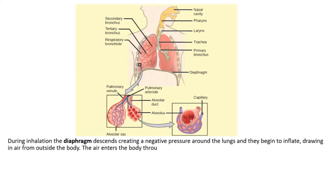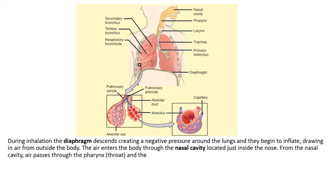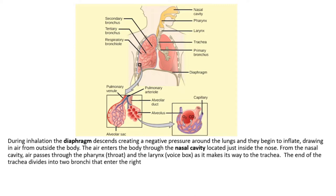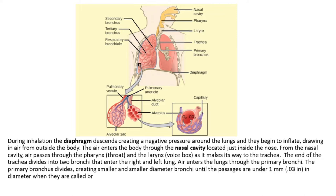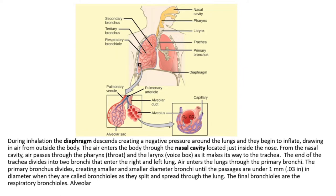The air enters the body through the nasal cavity located just inside the nose. From the nasal cavity, air passes through the pharynx (throat) and the larynx (voice box) as it makes its way to the trachea. The end of the trachea divides into two bronchi that enter the right and left lung. Air enters the lungs through the primary bronchi, which divide creating smaller and smaller diameter bronchi until the passages are under 1 mm in diameter, when they are called bronchioles.